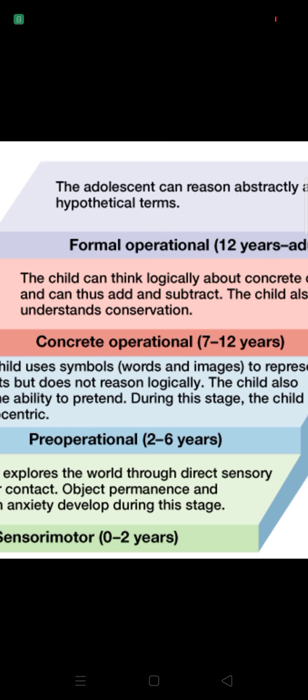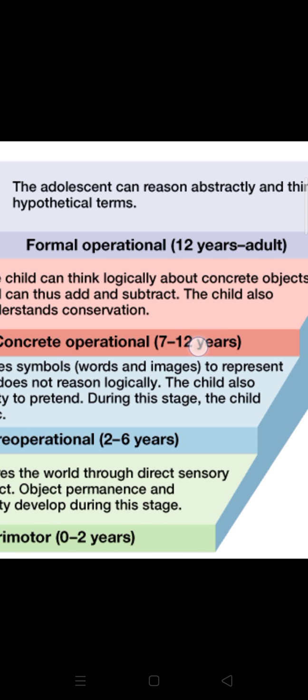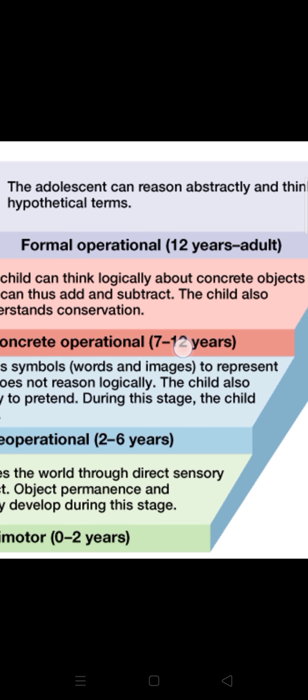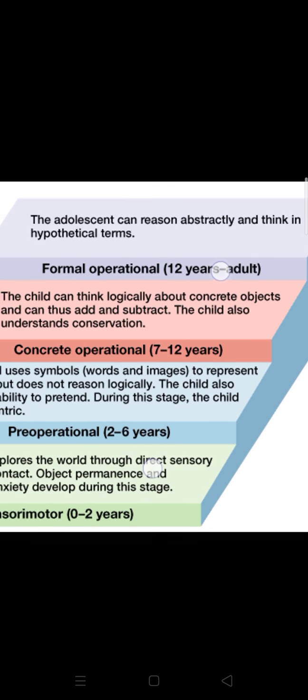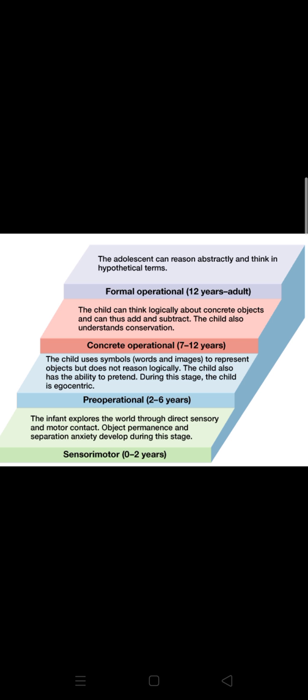In the formal operational stage, thinking extends to abstract reasoning into adulthood. These are the four stages of Piaget's cognitive development theory. If you appear in the SST test, you must remember the stages and their age ranges. Please subscribe to my channel for more videos. Thank you for watching. Allah Hafiz.